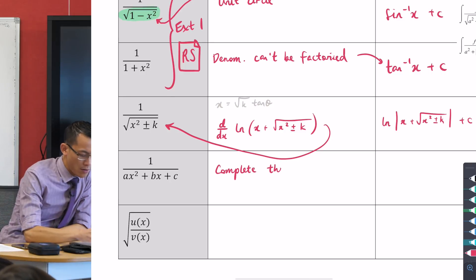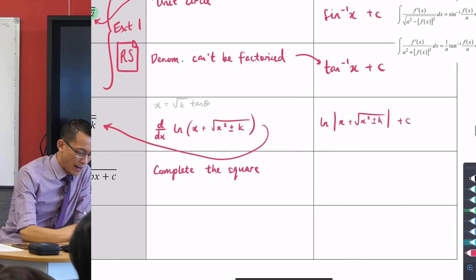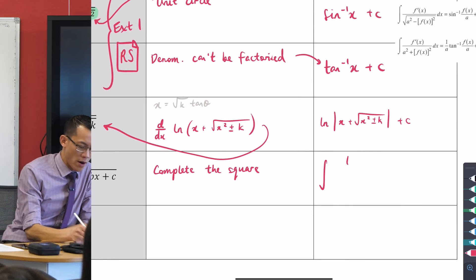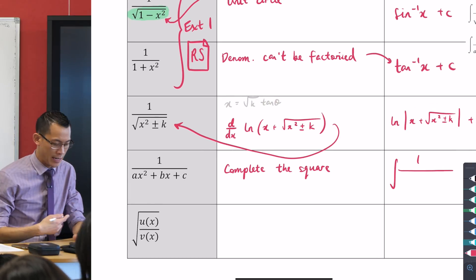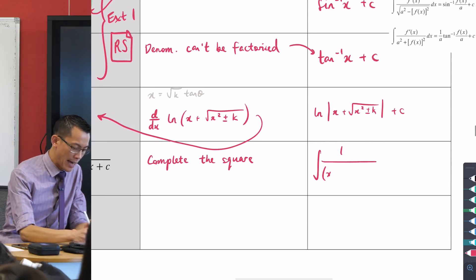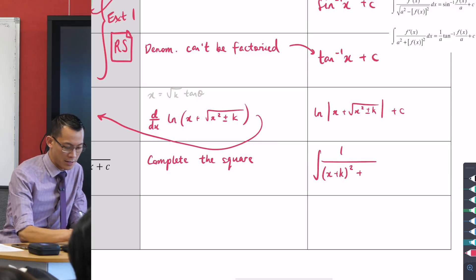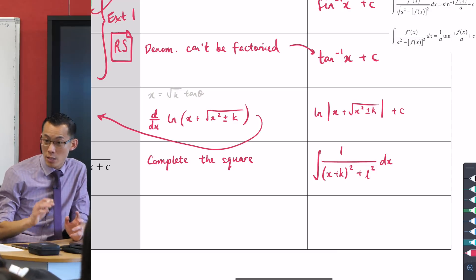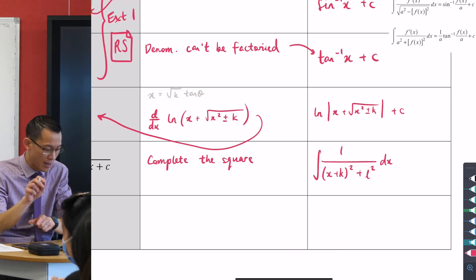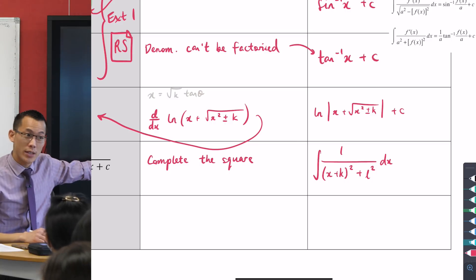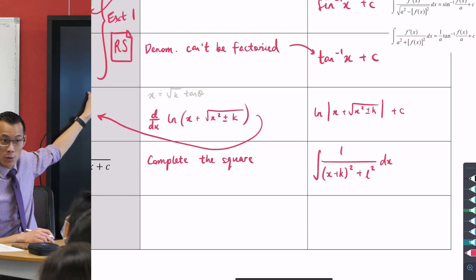These will always turn into something like what you see up above, so long as you can complete the square. So, what we're going to do, just as an example, is we will end up with something like one over, if I'd given you something monic over here, then I guess you would have something like x plus k all squared plus some other thing l squared with respect to x. This is what we get after completing the square.